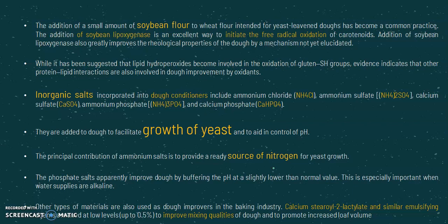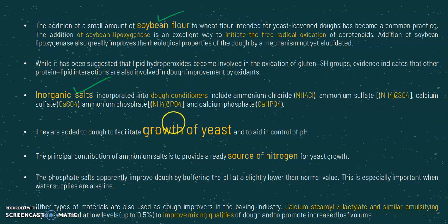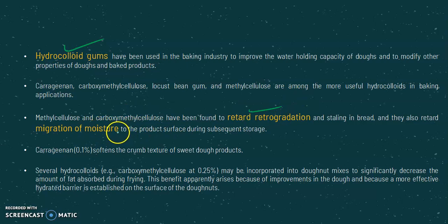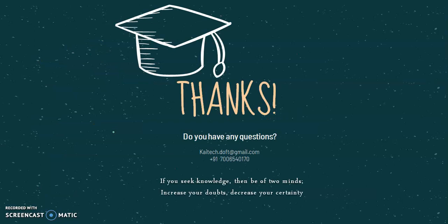There are other additives used to improve the flour properties. Bean flour is added sometimes, organic salts are added, and ammonia is added for the growth of yeast. Hydrochlorides are sometimes used, and to retard retrogradation, carboxymethyl cellulose and methyl cellulose are added to the dough flour — they retard bread staling. This was all about the dough improvers.